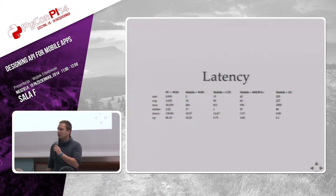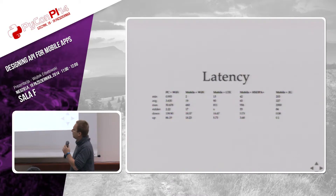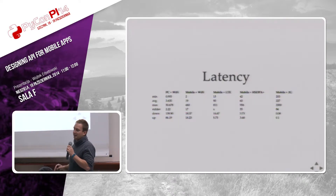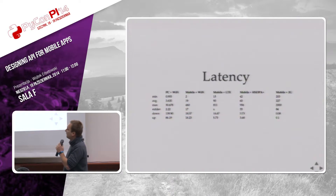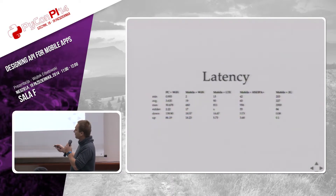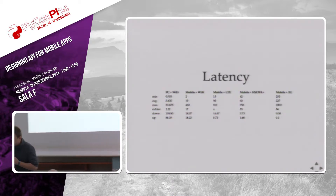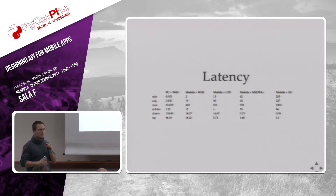Here's some data we gathered in the center of Warsaw on a few different connections, starting in our office on a MacBook Pro around mid-2011. On Wi-Fi, the minimum ping was under one millisecond, and the average was slightly above three milliseconds. The key metrics are the average and standard deviation — if standard deviation is high, you have to test both below and above the average. The last two metrics are download and upload speed in megabits. It's a pretty good connection in our office, but on the same Wi-Fi using a mobile device it's about 10 times worse, due to the weaker modem in mobile devices.